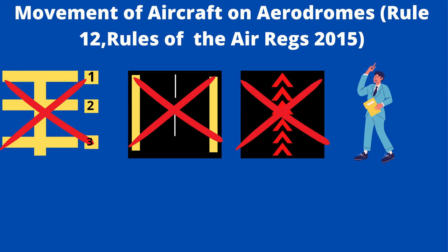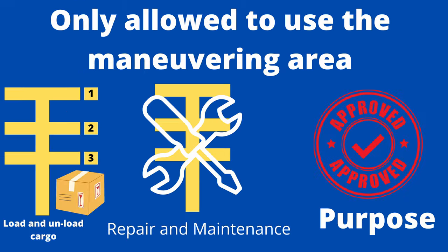Movement of aircraft on aerodromes — Rule 12, Rules of the Air Regulations 2015: an aircraft must not taxi on the apron or the manoeuvring area of an aerodrome without the permission of the aerodrome authorities. The manoeuvring area is that part of the aerodrome provided for take-off and landing of aircraft and for the movement of aircraft on the surface — that is, taxiing — excluding aprons and maintenance areas. An apron is a paved area of an aerodrome used for purposes such as loading and unloading of aircraft, aircraft turnaround operations, maintenance and repair, and any other approved purpose other than flight operations.